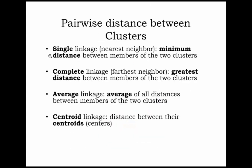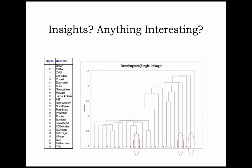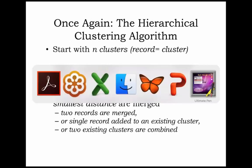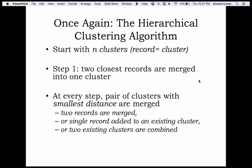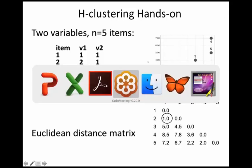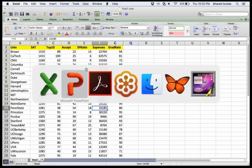So now you know what single linkage, complete linkage, average linkage, and centroid linkage are. We'll discuss each of these in just a minute. For the hands-on, rather than dealing with a large dataset — like the example with 25 universities and 6 variables — we are just taking a tiny example to understand hierarchical clustering.